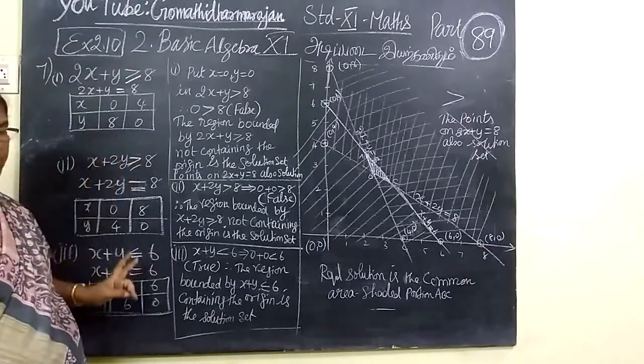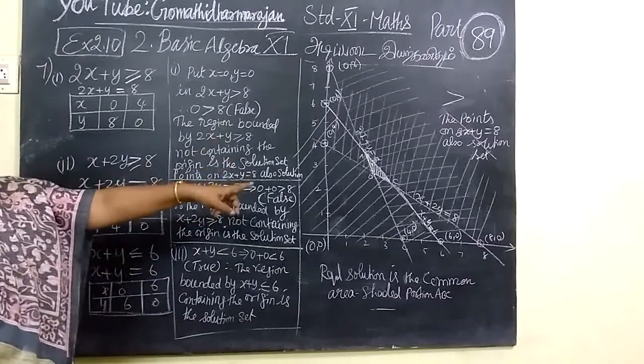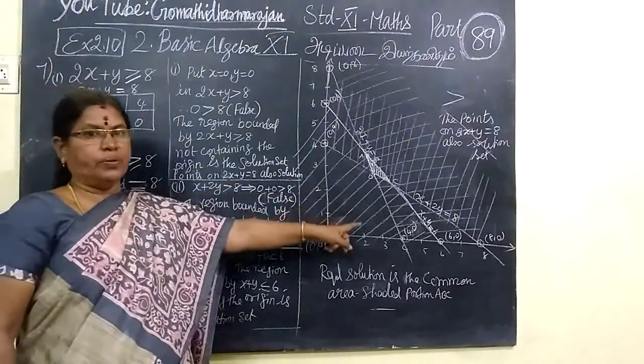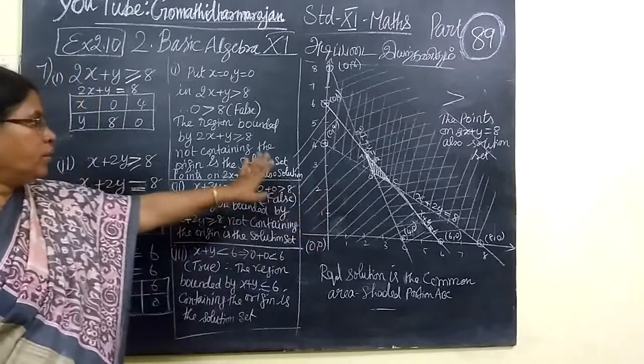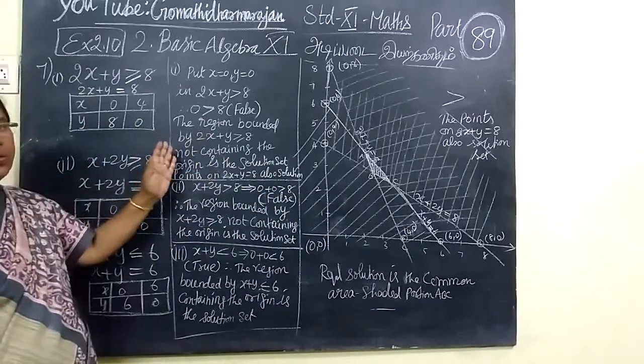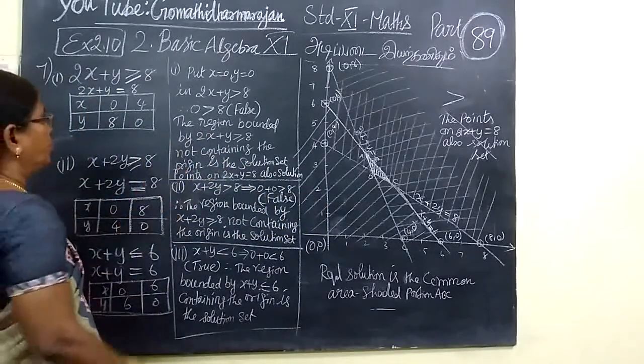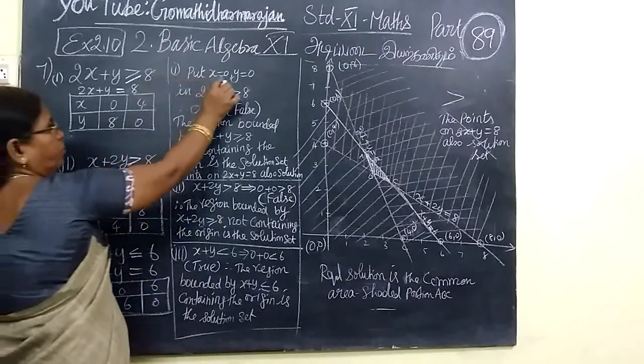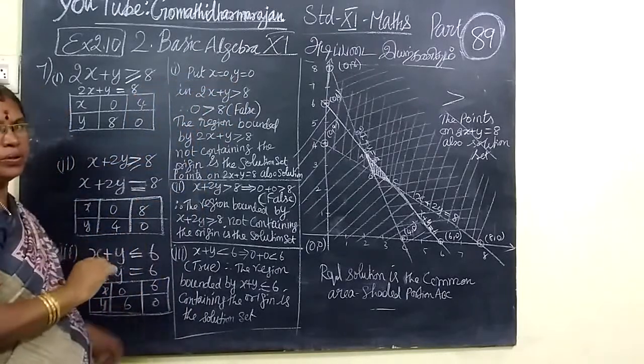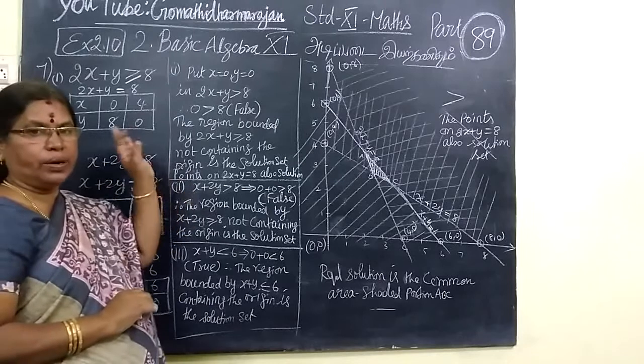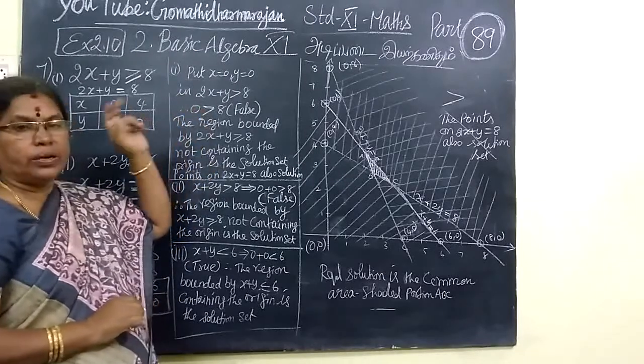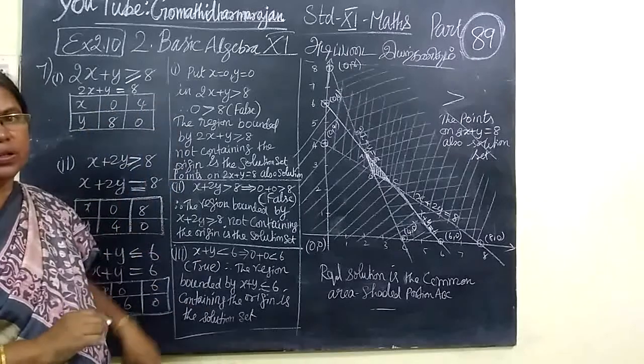That is the position. I will draw the graph. So this is the position. Put x equal to 0, y equal to 0. If we want to draw the graph, we want to do this.